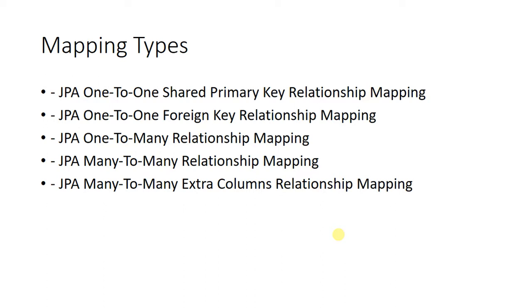In a database we have several tables, and these tables will have some mapping relationships. This kind of mapping can be done with the help of mapping functions in Spring Boot and JPA. We have many types: one-to-one mapping, one-to-many mapping, many-to-many mapping, and many-to-many using an extra column. In this video we will see the definitions and concepts, and in upcoming tutorials we will see the practical implementation.